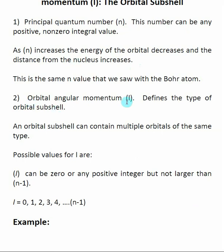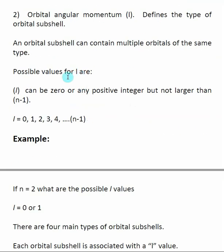The orbital angular momentum l defines what type of orbital we are discussing. There are different types of orbitals, and these have different properties. By giving these two pieces of information, we pretty well describe the orbital itself — n tells how far the electron is from the nucleus, and l tells what kind of orbital we're talking about. A given subshell can contain multiple orbitals. The possible l values are determined by n: l can be any zero or positive integer, but it cannot be larger than n minus one.